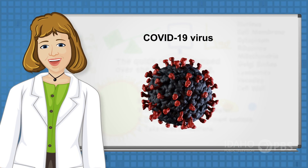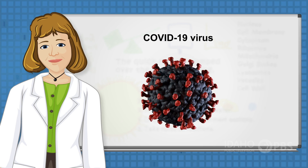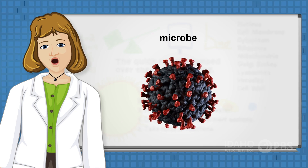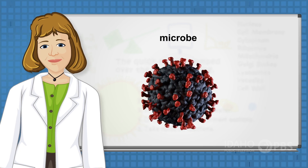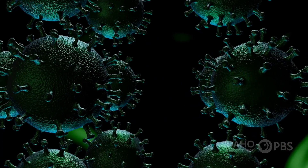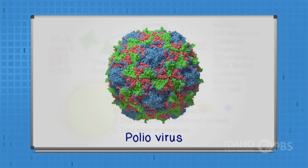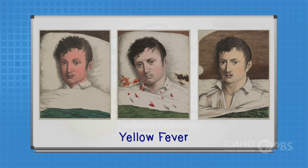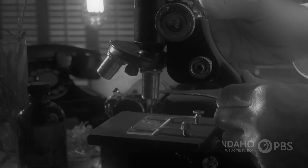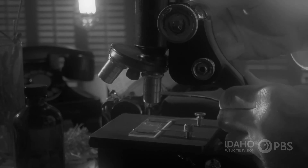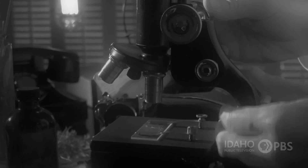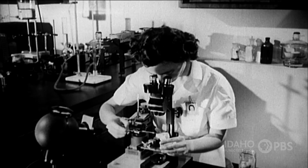On its own, a virus is not alive like you and I are. It's a tiny microbe — they're too small to be seen with a naked eye. For example, the polio virus is about 10,000 times smaller than a grain of salt. Viruses weren't identified until 1892 and they weren't actually seen until 1931 when the electron microscope was invented.